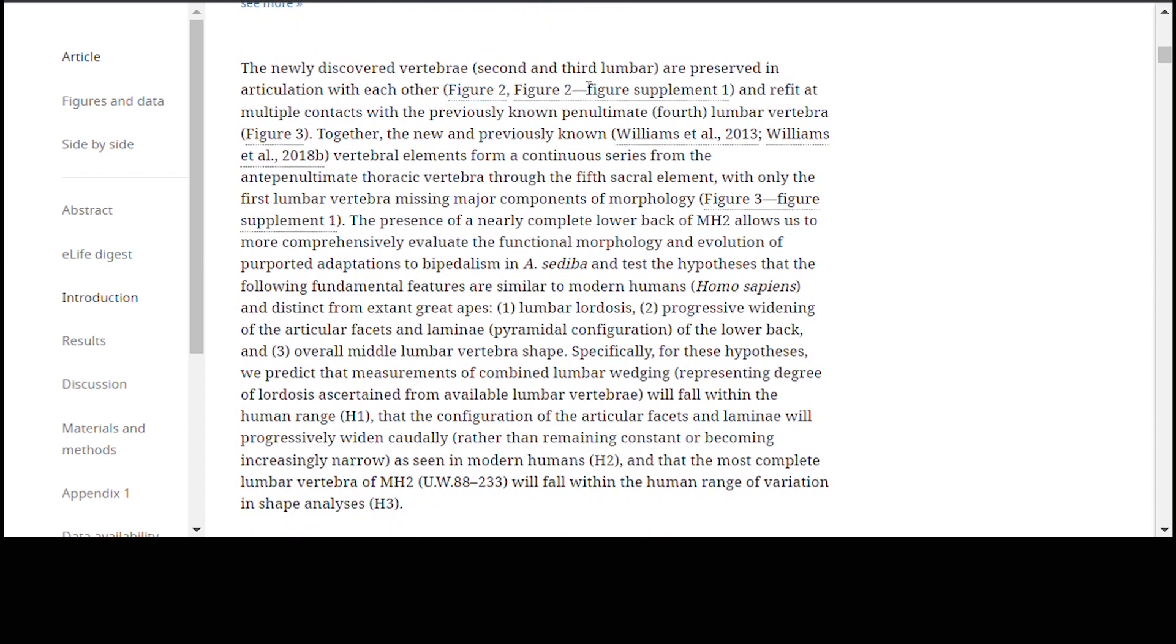The newly discovered vertebrae, second and third lumbar, are preserved in articulation with each other. So, that's really interesting. These two vertebrae were actually fused right together like they were in life, one on top of the other, and refit at multiple contexts with the previously known penultimate fourth lumbar vertebrae. So, that's interesting. This vertebrae, these new vertebrae that they found, even though they were out of the pit on this trackway, actually fit perfectly with the already discovered vertebrae from the skeleton, allowing us to know that they all came from the same individual.